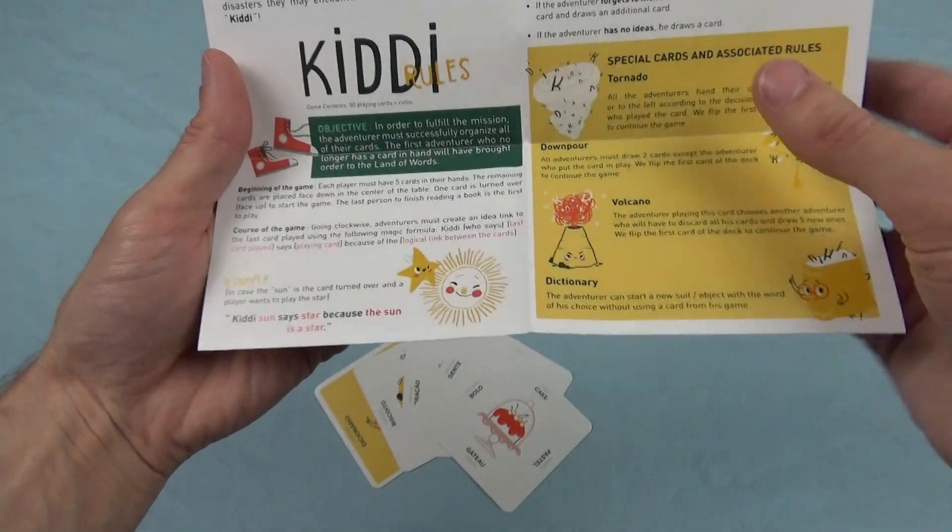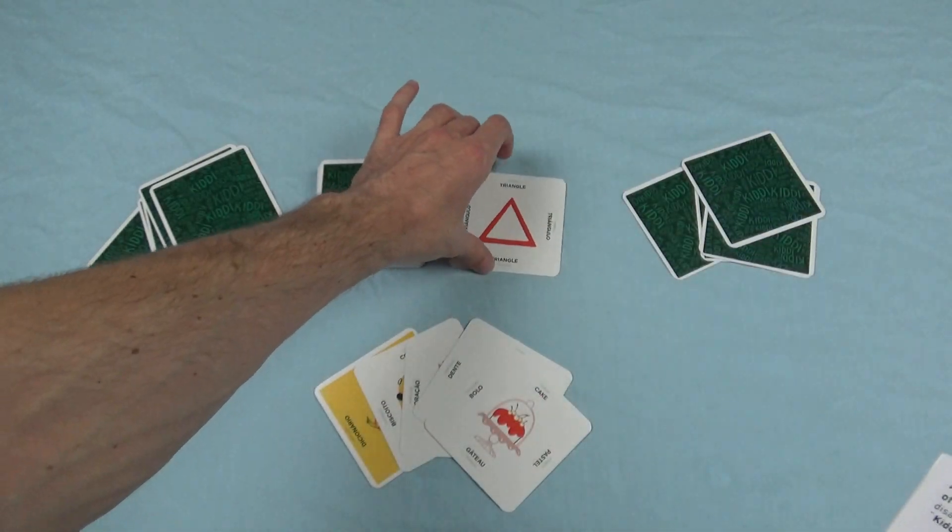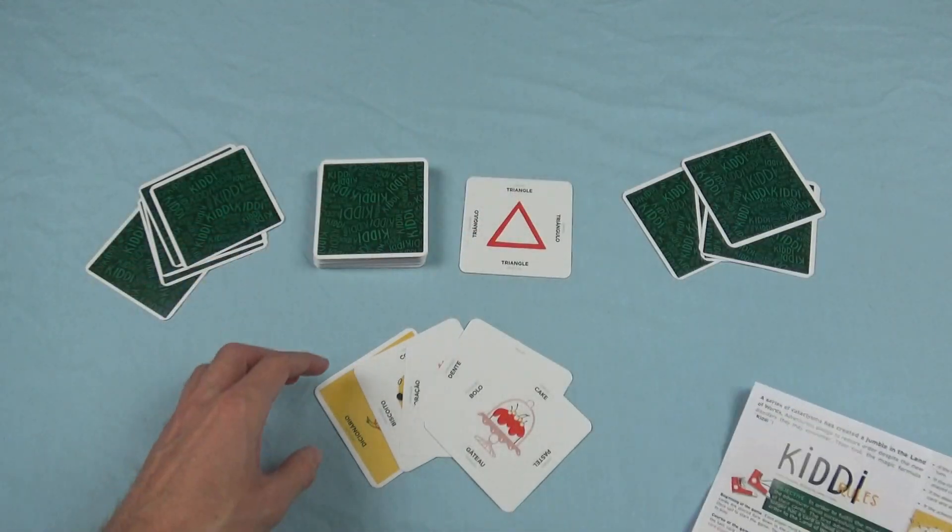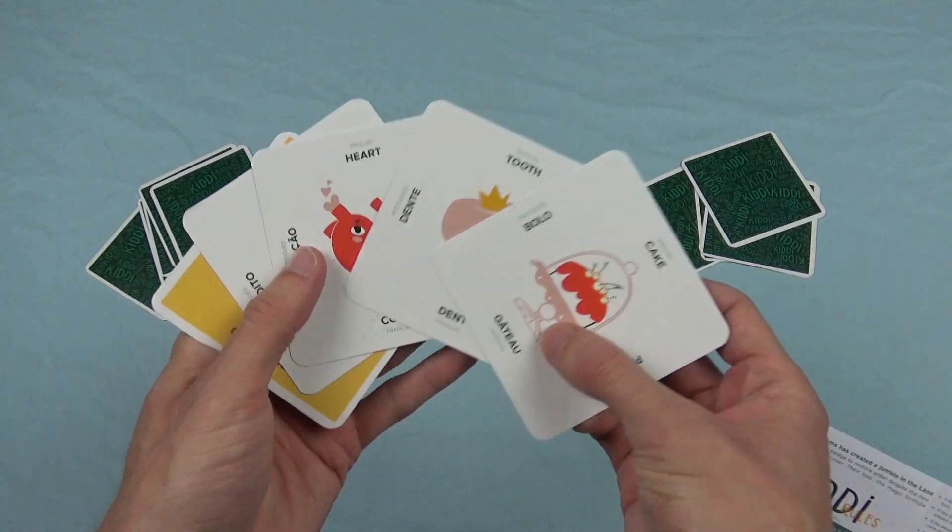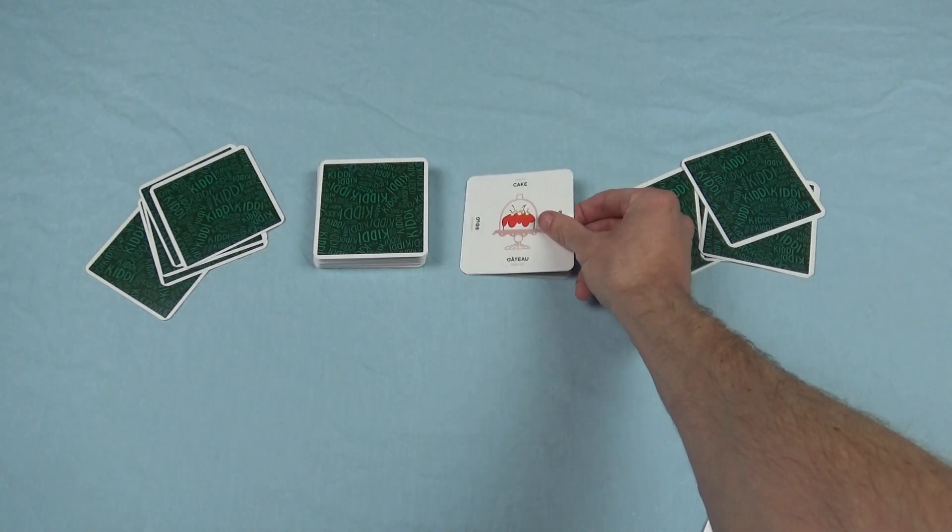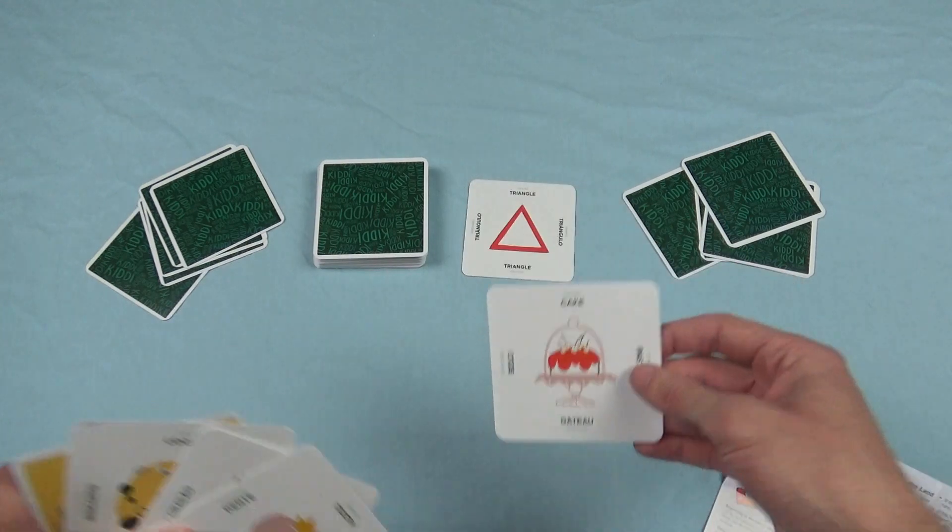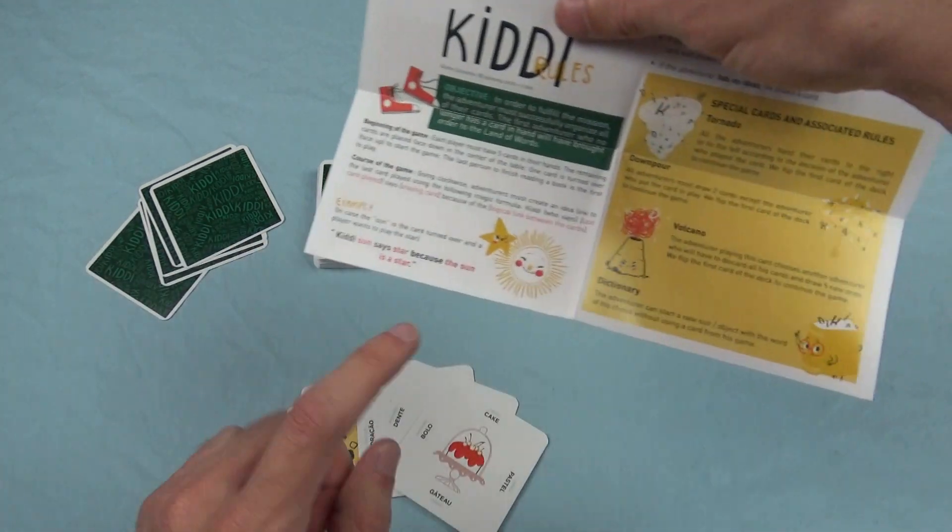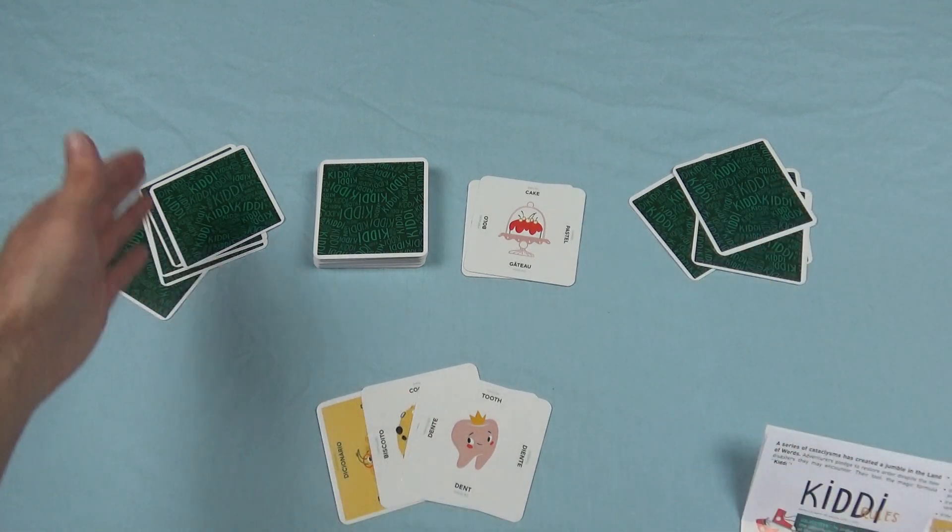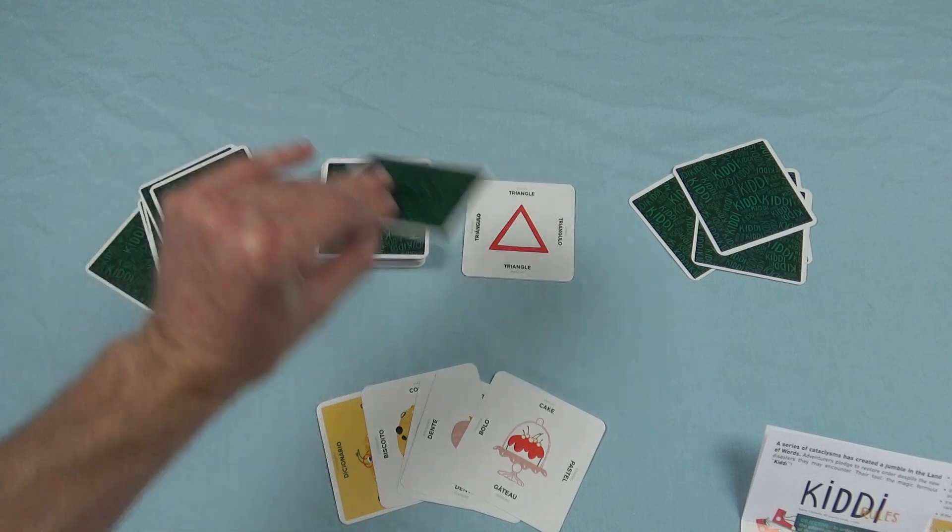By saying this, that means the card would be a sun over here, and the player would try to match one of his cards. So, he would have like a star, and he would just place it on top, and then he would say, Kidsy, sun says star because the sun is a star. And then, if the majority agrees, then it goes to the next player. If they don't agree, then he has to take his card back, and then take another card.